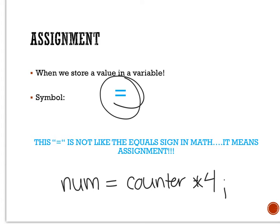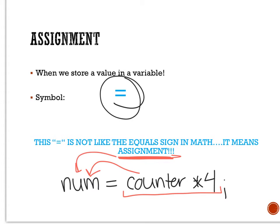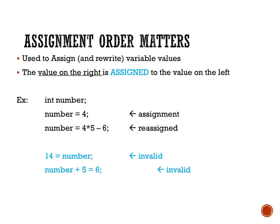This is not stating that num and counter times 4 are currently equal. What this is saying is that whatever is on the right-hand side, we are going to assign that into whatever is on the left-hand side. So I am going to take counter times 4 and assign num to be that value. This is assigning a value to the variable that is on the left. Remember that the equal sign is used to assign and rewrite variable values.